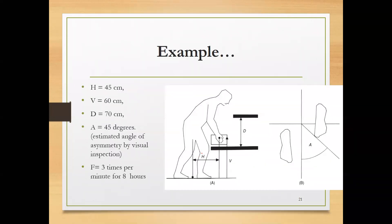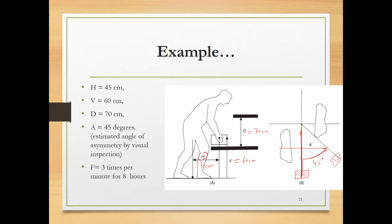So H is 45 cm, V is 60 cm, D is 70 cm, and the angle of twist or angle of asymmetry with respect to the sagittal plane is 45 degrees. That is the starting position of the tray. The person picks the tray from this position, turns 45 degrees, and places the tray. Frequency is 3 times per minute for 8 hours.